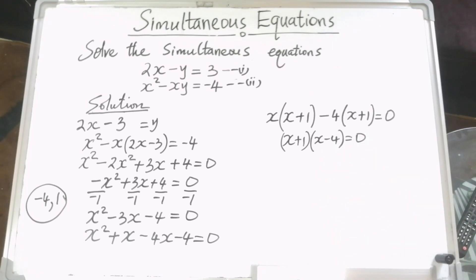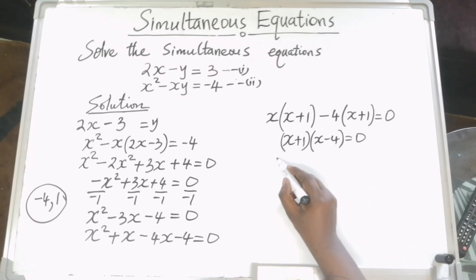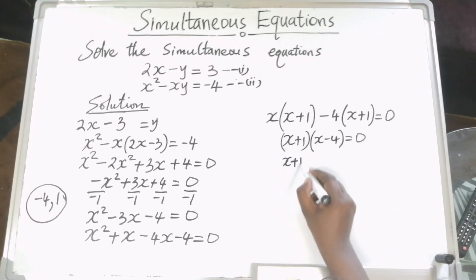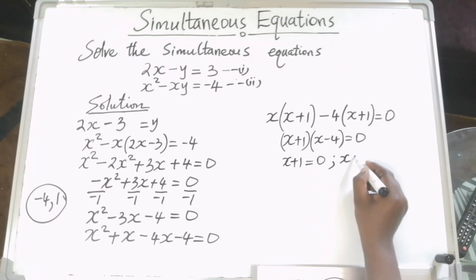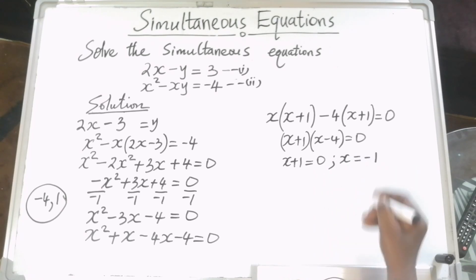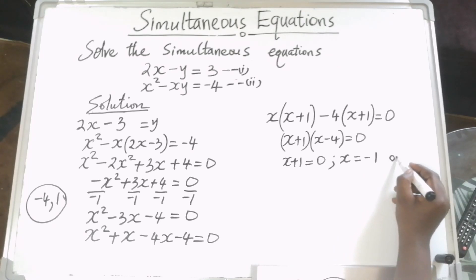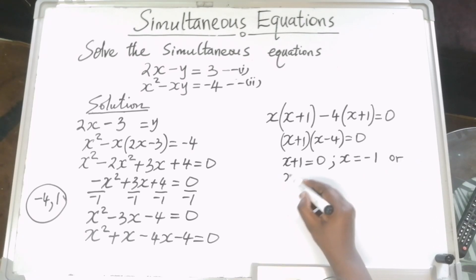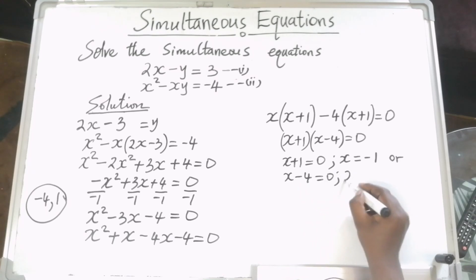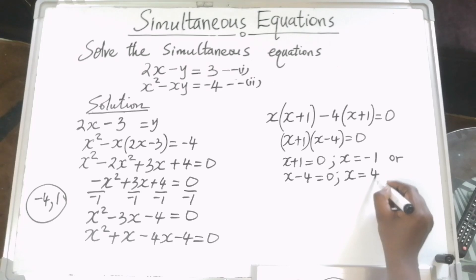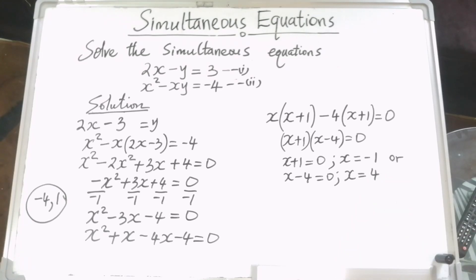With that, we can find the value of x. Since x plus 1 is common, we get x plus 1 in brackets times x minus 4 equals 0. So x plus 1 equals 0 gives x equals minus 1, and x minus 4 equals 0 gives x equals 4. We have two values of x: minus 1 and 4.